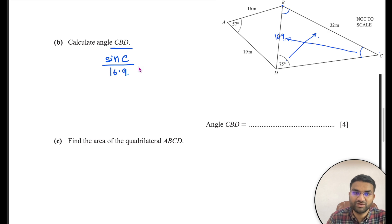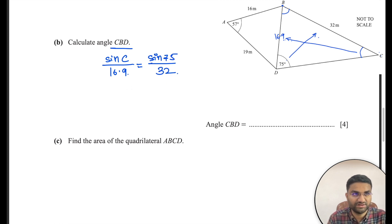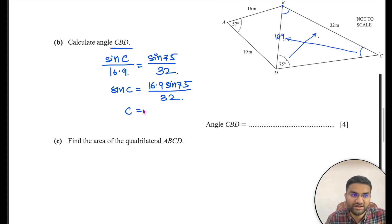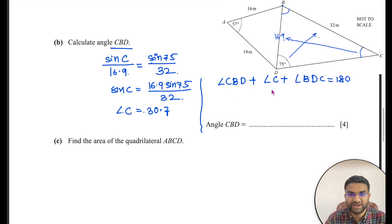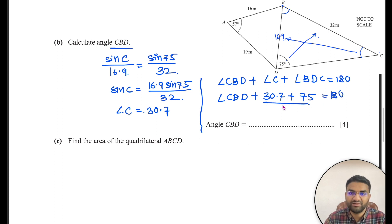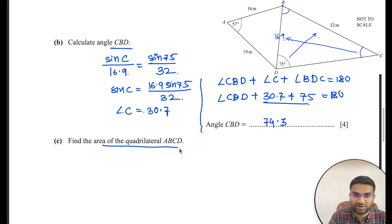So sine C = 16.9 × sin 75° ÷ 32, giving angle C ≈ 30.7°. Using the angle sum of a triangle (180°): angle CBD + 30.7° + 75° = 180°, therefore angle CBD ≈ 74.3°.